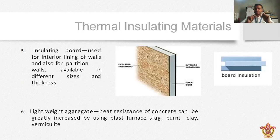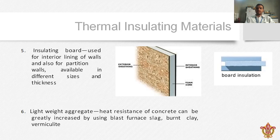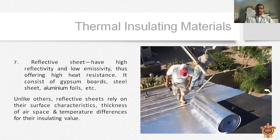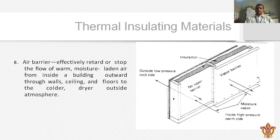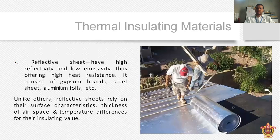Insulating boards are available in different sizes, colors, and textures in the market. Generally, partition boards and lightweight aggregates are used. Lightweight aggregate: the heat resistance of concrete can be greatly increased by using glass, finest slag, wind clay — so this is also used as a thermal insulating material. The next is a reflective sheet, which generally consists of a gypsum board, steel sheet, and aluminium foil. There is also an air barrier, which effectively stops the flow of wall moisture and air from inside a building outward through walls and ceilings to the colder outside atmosphere.